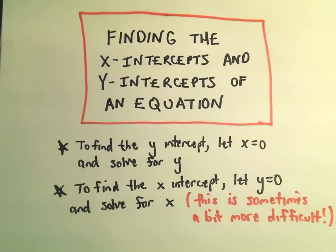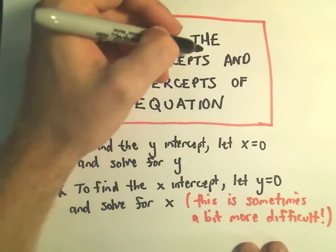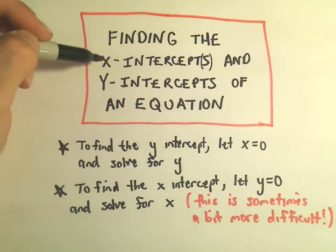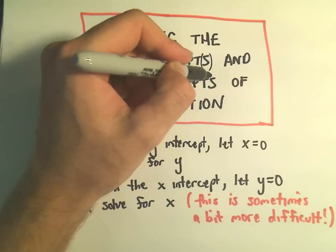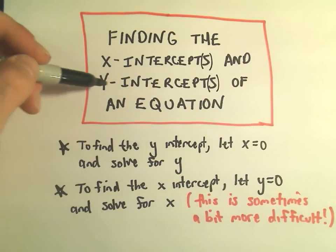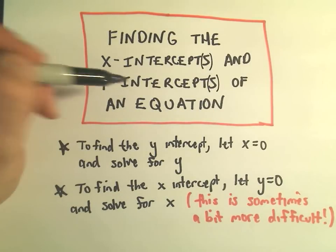In this video I want to talk about finding the x-intercepts and the y-intercepts of an equation. A graph may or may not have any x-intercepts or y-intercepts. If it's going to be a function, technically we should say there's just a y-intercept.